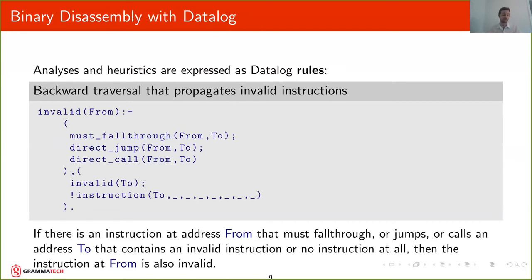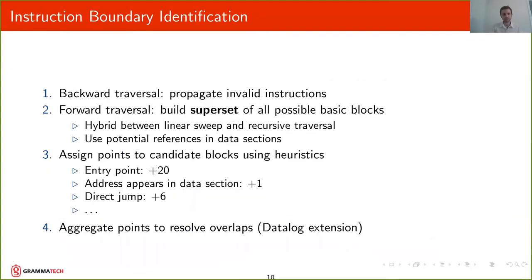contains an invalid instruction or no instruction at all, then that instruction at address From is also invalid. And as you can see this is a recursive rule and this rule is going to be applied repeatedly and that's going to grow the number of invalid instructions until we reach a fixed point.